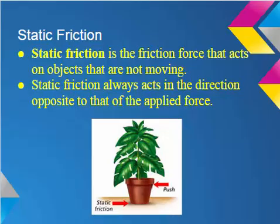The first type of friction we will cover is static friction. This is the friction force that acts on objects that aren't moving. This always acts in the opposite direction of the applied force. Take a look at the picture — if you were to push on the plant, the static friction would prevent it from moving.